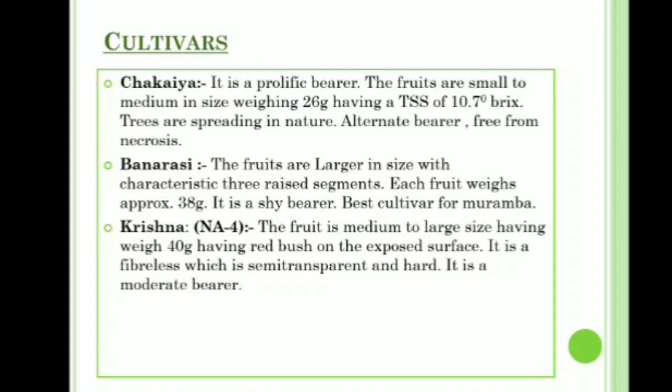Cultivars: the first is Chakaya, which is a prolific bearer. The fruits are small to medium in size, weighing about 26 grams, having a TSS of 10.7 degrees Brix. Trees are spreading in nature, alternate bearer, and free from necrosis. Another one is Banaresi — fruits are larger in size with characteristic three raised segments; each fruit weighs approximately 38 grams. It is a shy bearer.